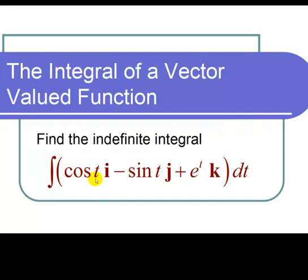The integral of the cosine of t is the sine of t. The integral of negative the sine of t is cosine of t. And the integral of e to the t is e to the t.